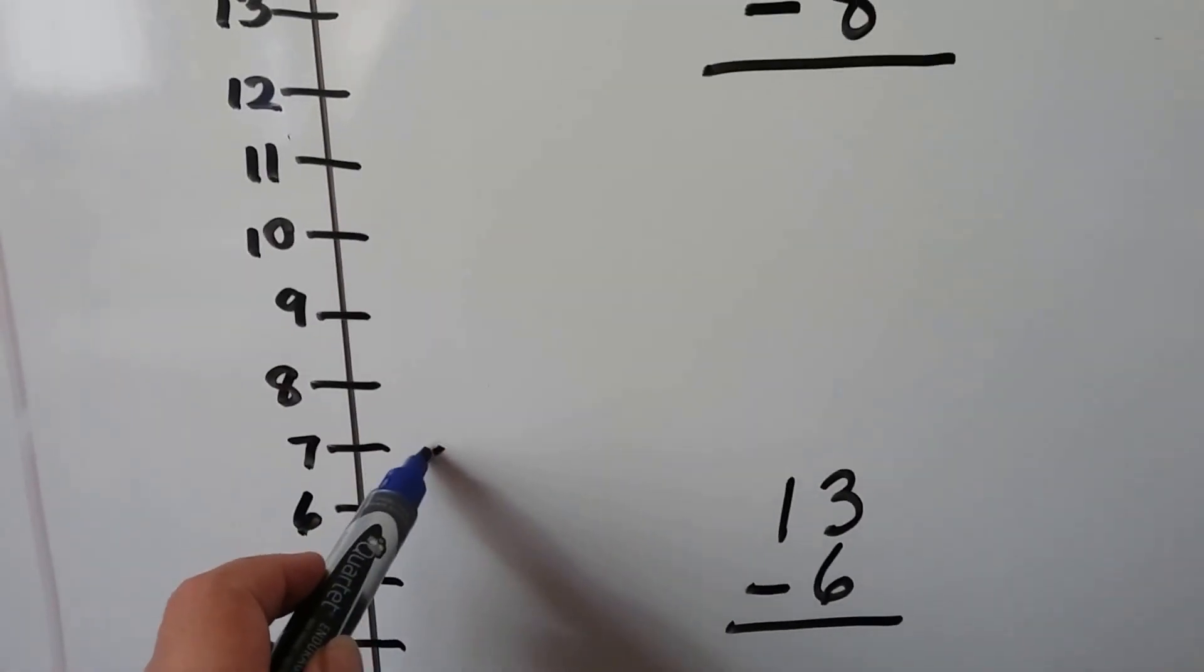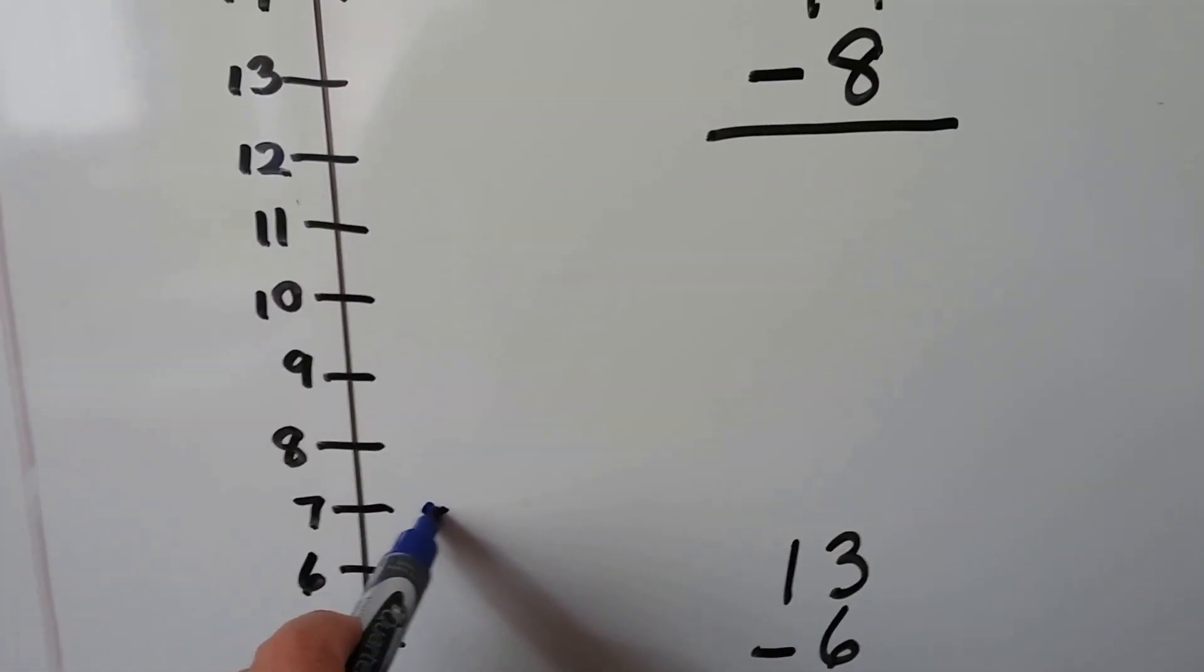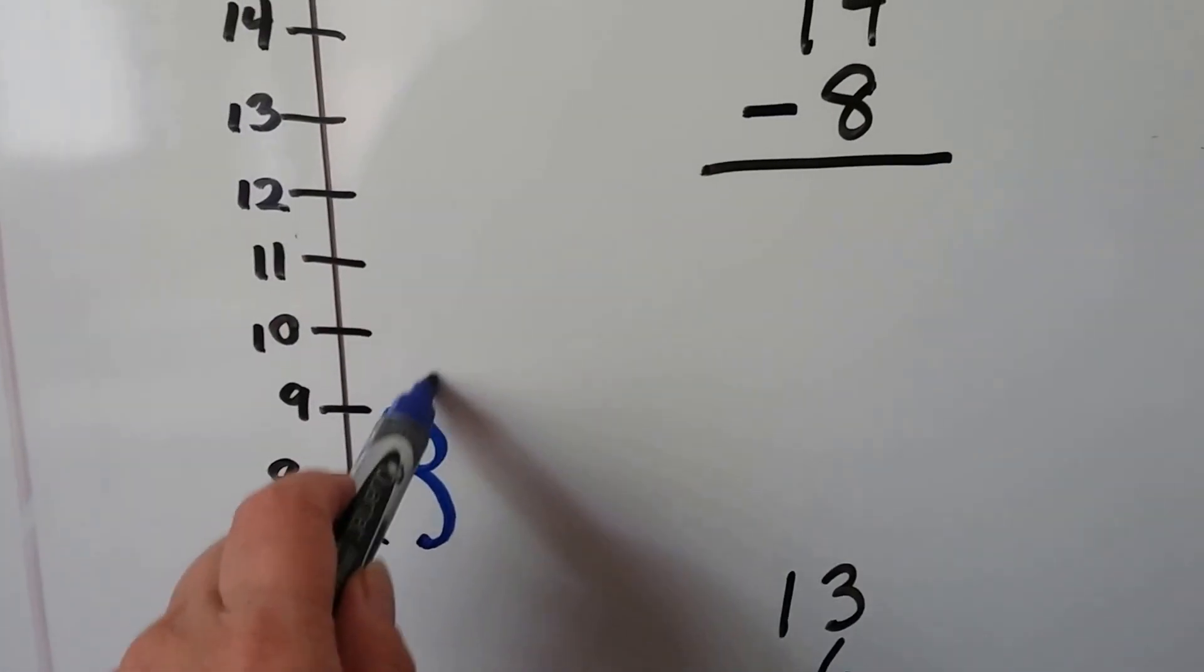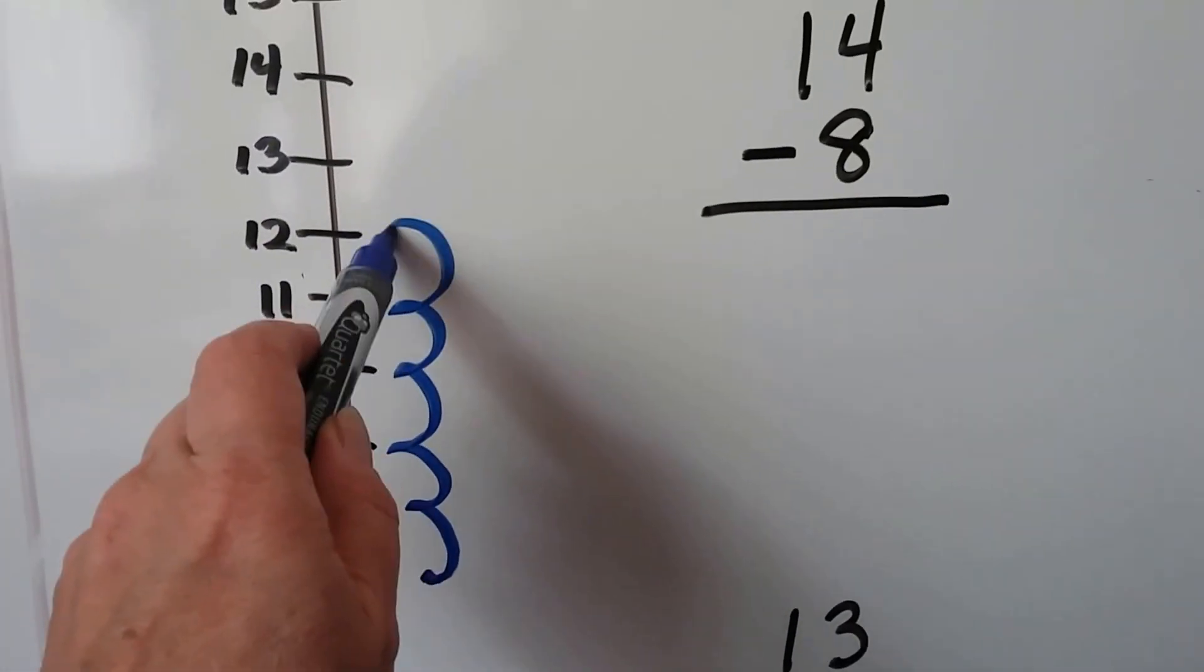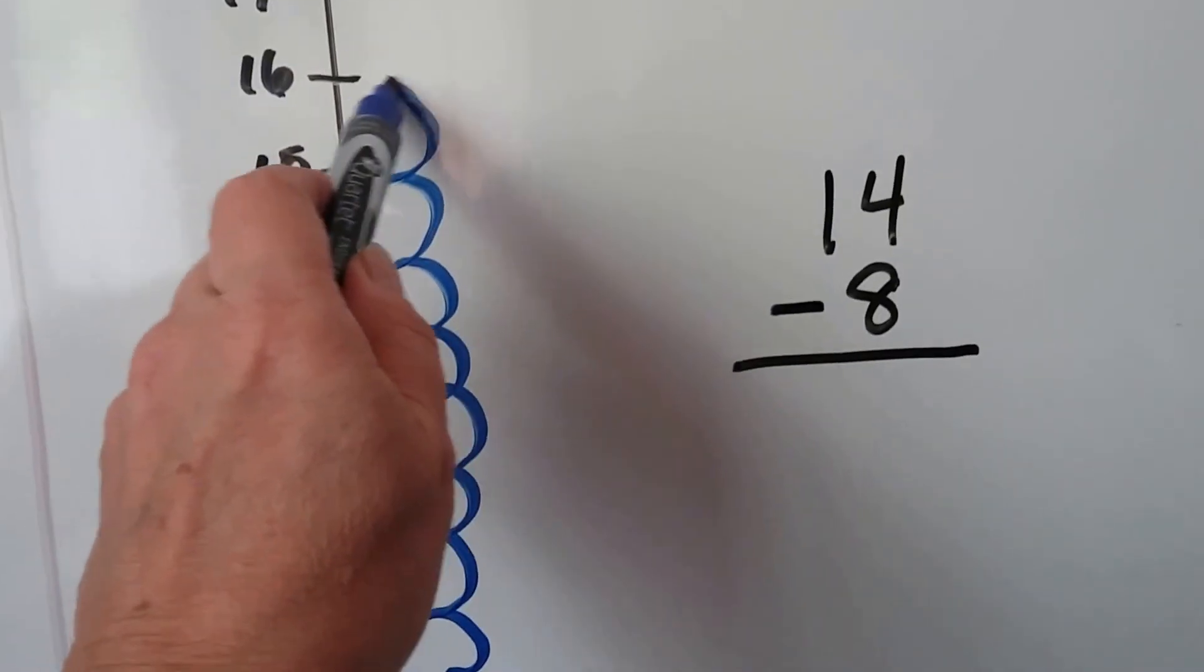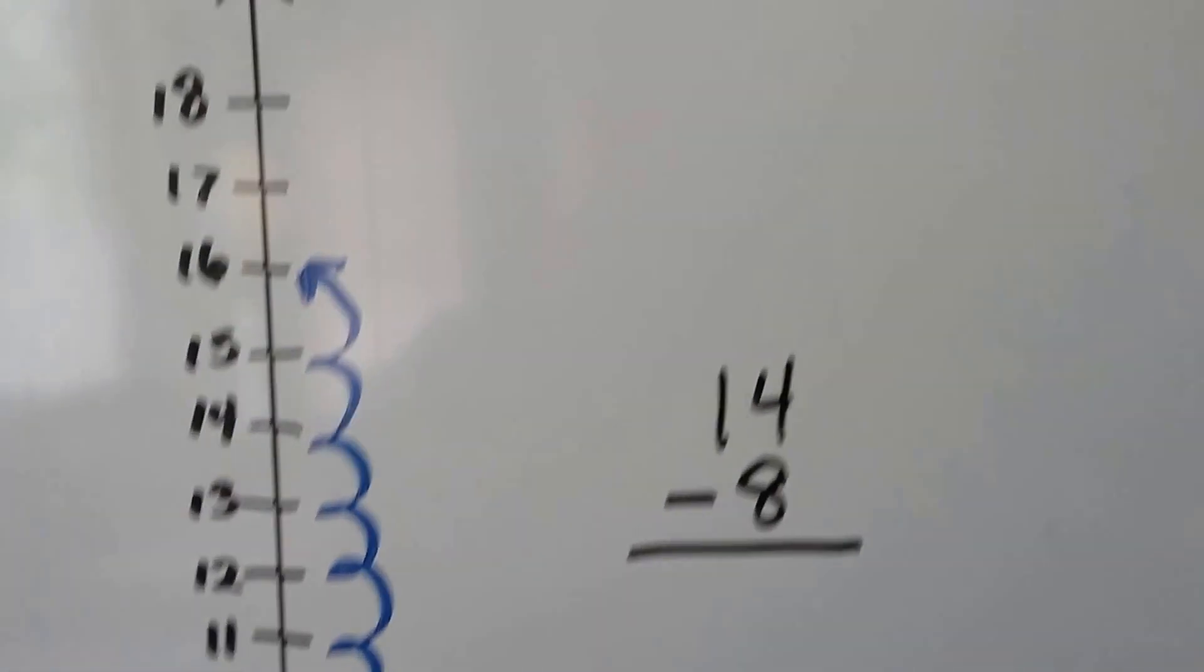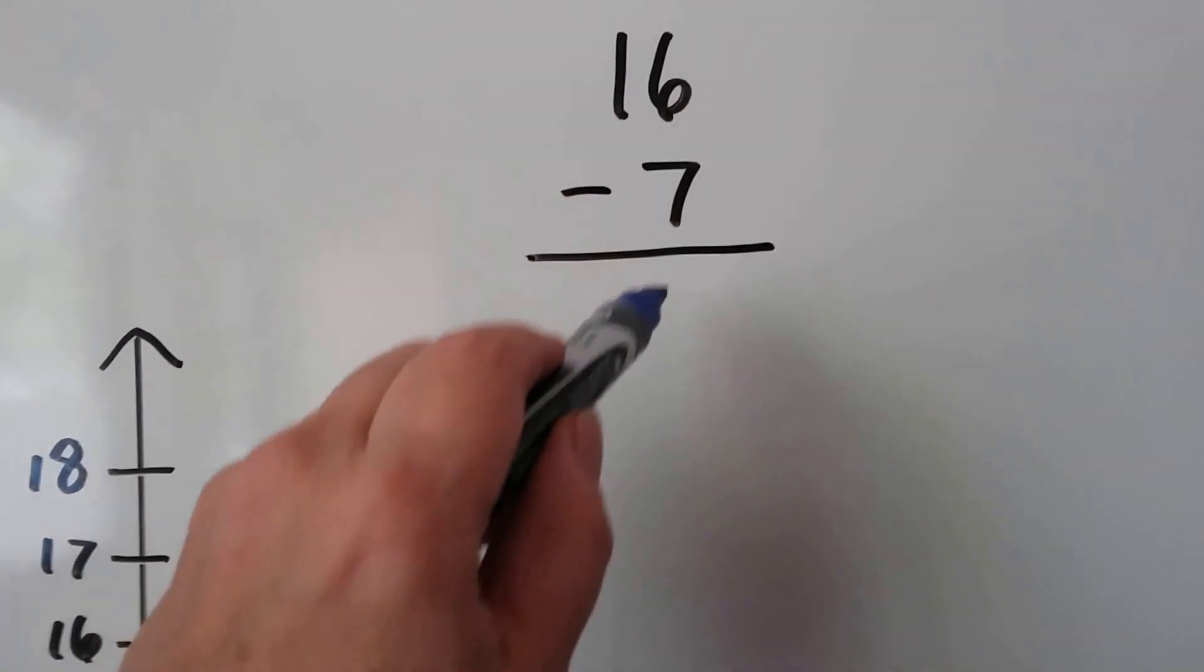Here's 7, so let's start here and count up to 16: 1, 2, 3, 4, 5, 6, 7, 8, 9. So 16 minus 7 is 9.